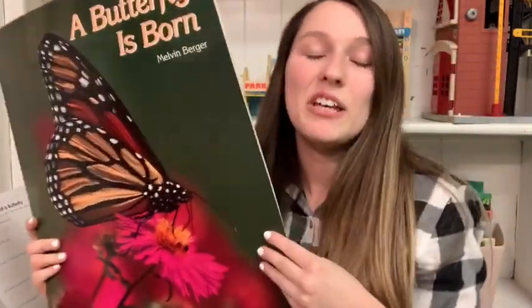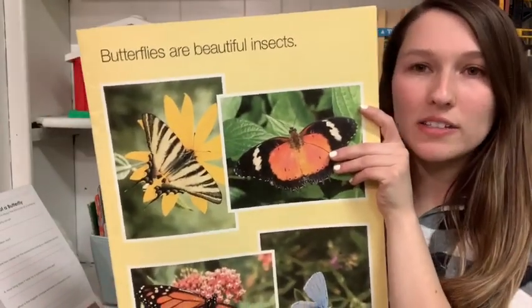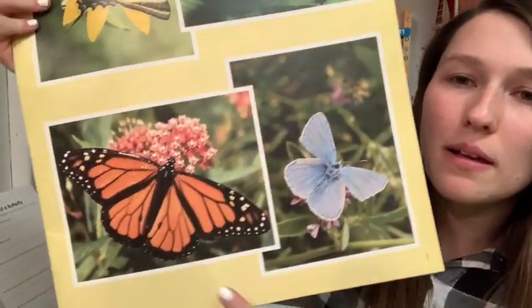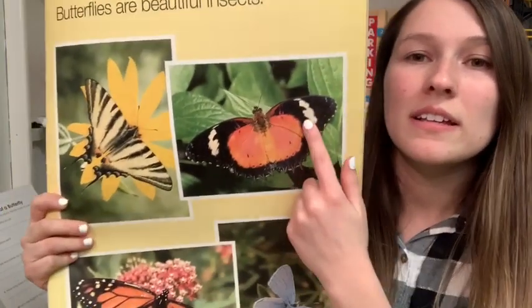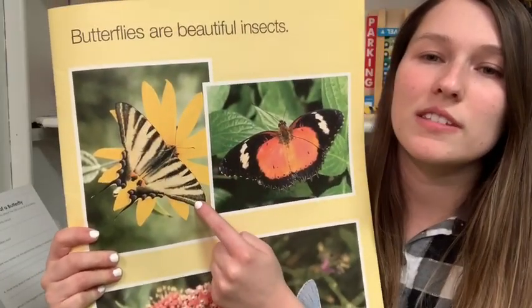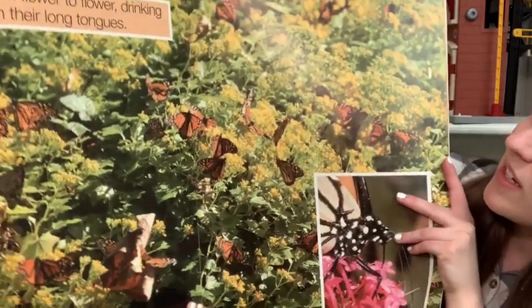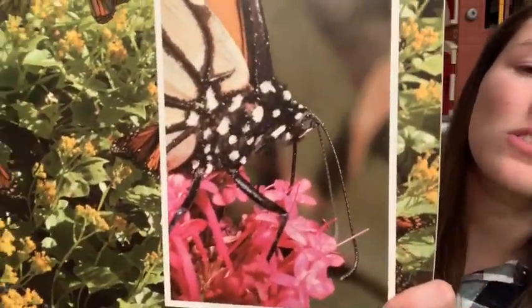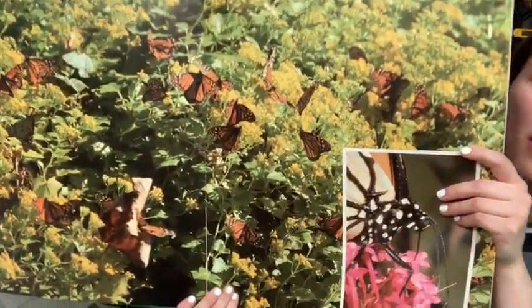Now we are going to read a story about the stages of the butterfly and go into detail. Butterflies are beautiful insects. Look at all these beautiful butterflies. If you notice something — if you look at their wings, they're the exact same on each side because they're symmetrical. That's a big word — they show symmetry. They fly from flower to flower drinking nectar from their long tongues. Here's a picture of the butterfly drinking from the flower with their tongue, getting all that yummy nectar.